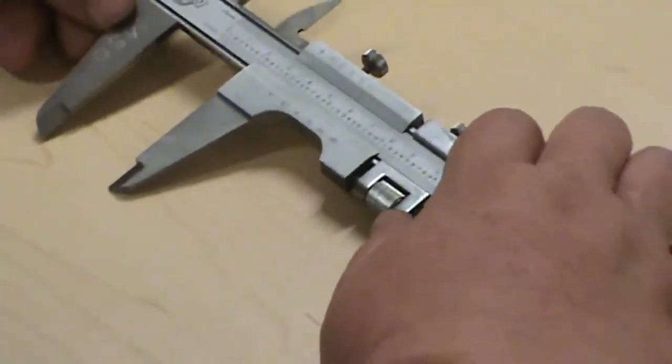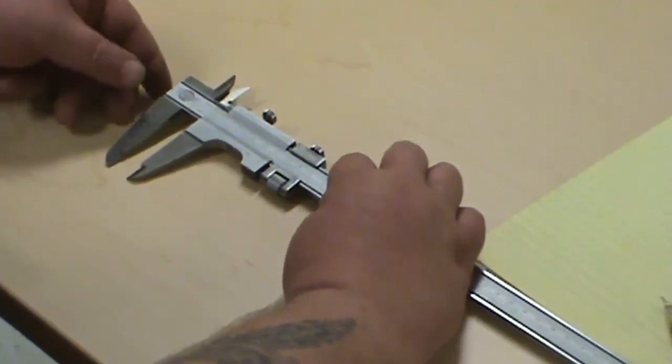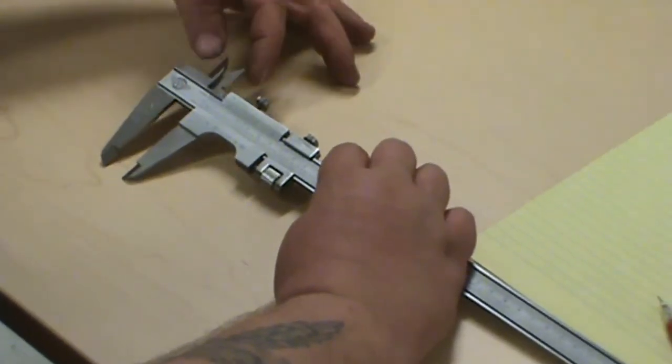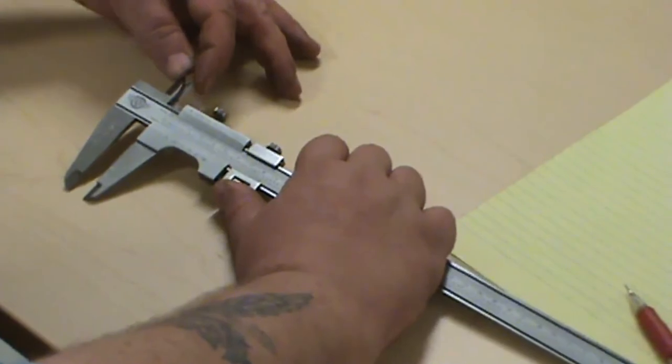With this type of caliper we can measure outside measurements with these outside jaws. We can measure inside measurements like a hole with these inside jaws.